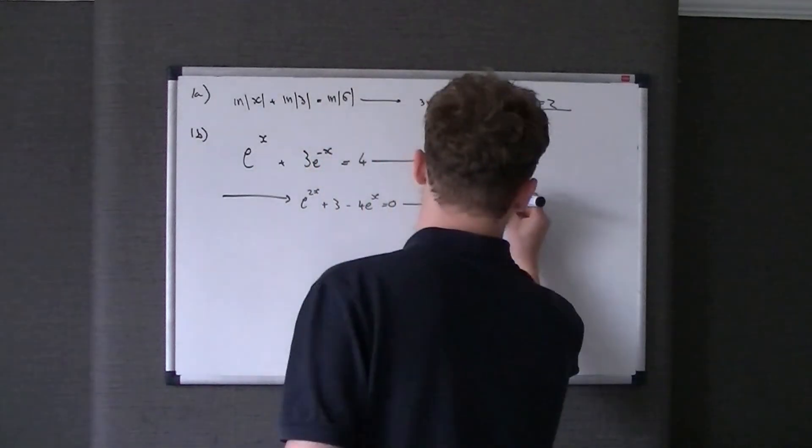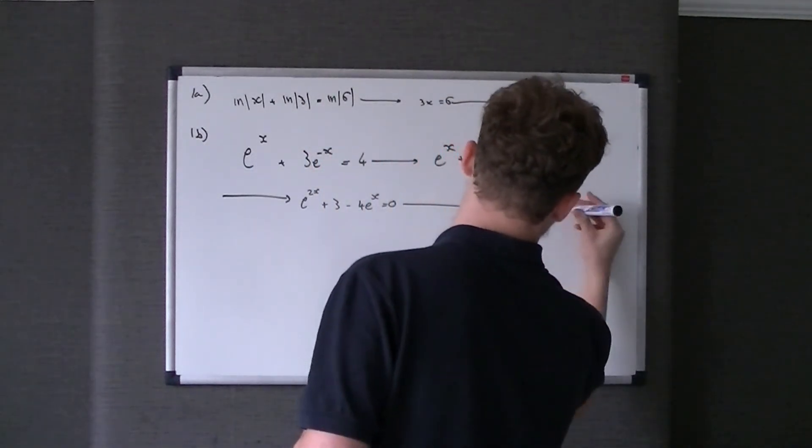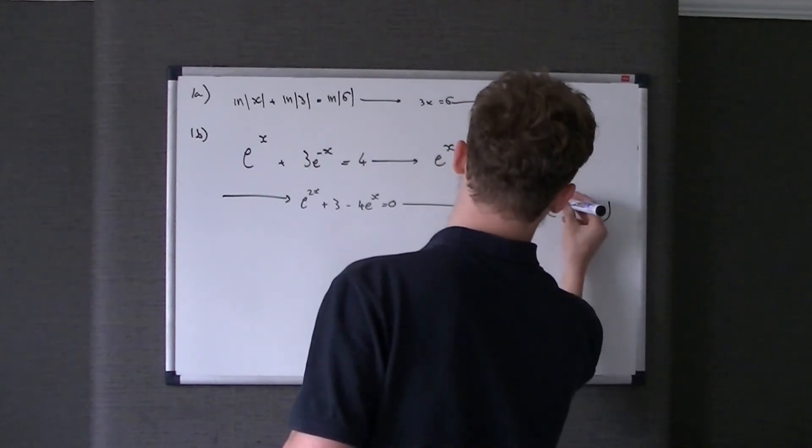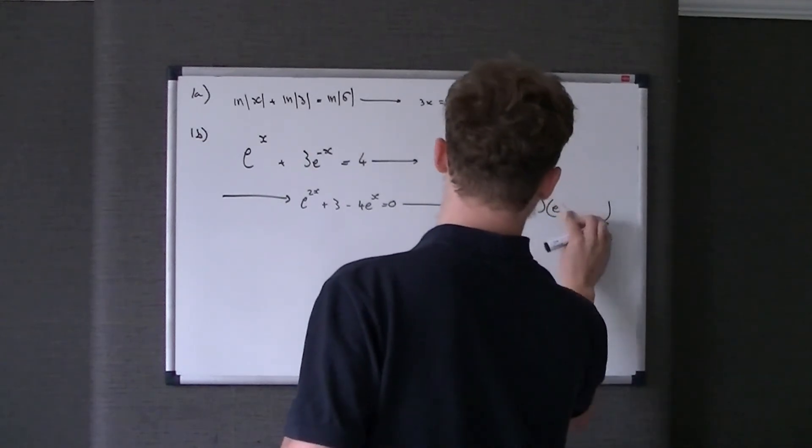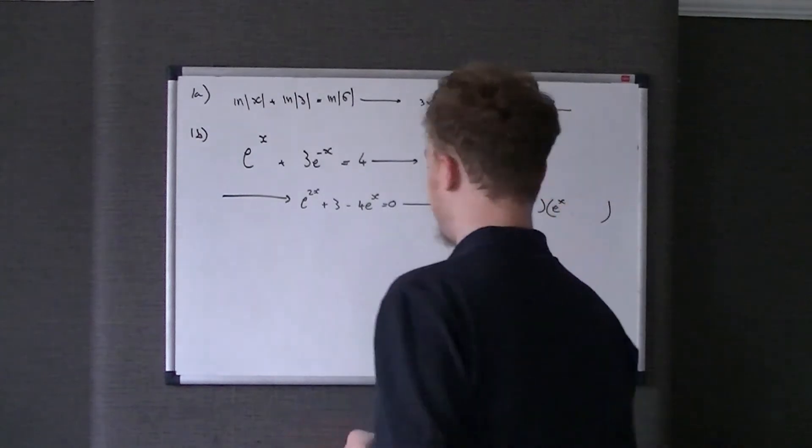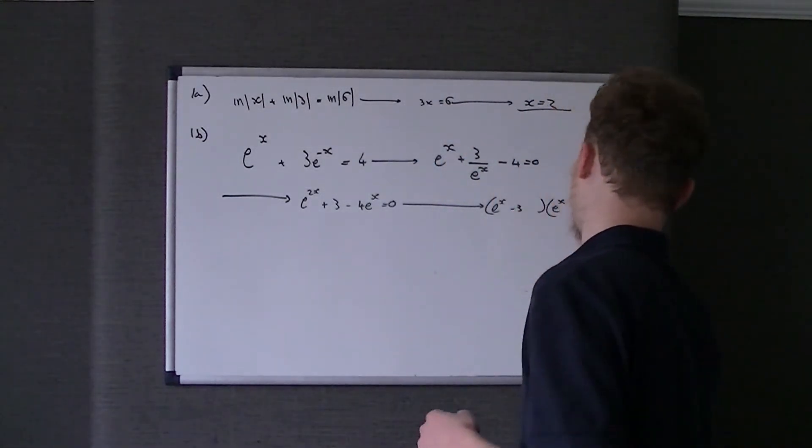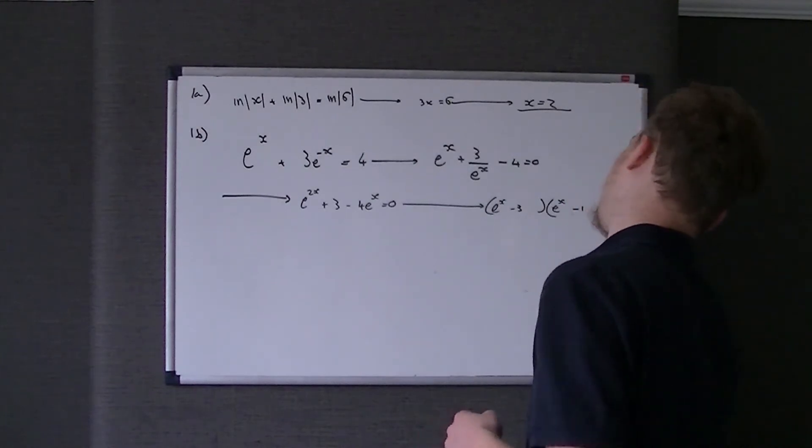So similar thing here, but instead of putting x as a common factor in both, we put e to the x. Because e to the x times e to the x is e to the 2x. So e to the x, and then it's just quite clearly minus 3 and minus 1, and that's all equal to 0.